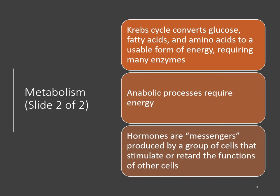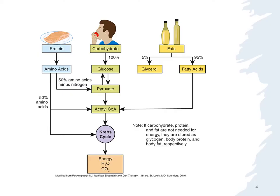This is figure 7.1 on page 122. This breaks down how proteins are broken down into amino acids. 50% of the amino acids minus nitrogen can turn into pyruvate; 50% of the amino acids could also go to acetyl-CoA, which will contribute to the Krebs cycle. The book is no longer calling it the Krebs cycle — it's calling it the TCA cycle.